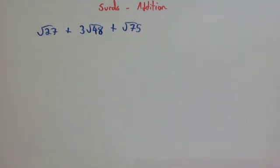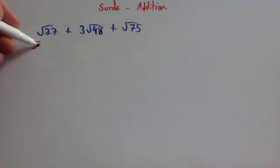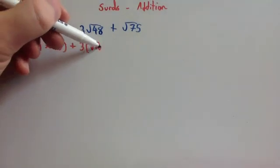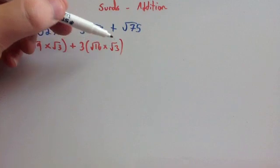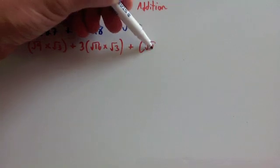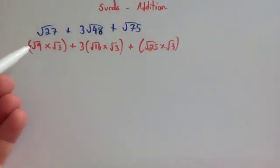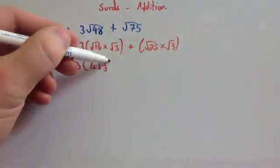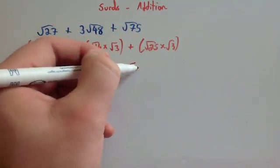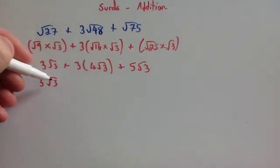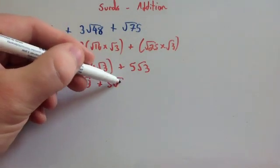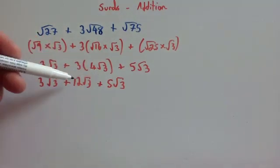Next we're going to do root 27 plus 3 root 48 plus root 75. Let's simplify each: the largest square number in 27 is 9, so root 9 times root 3; the largest square number in 48 is 16, so root 16 times root 3; the largest square number in 75 is 25, so root 25 times root 3. The square root of 9 is 3, giving 3 root 3; plus 3 brackets with square root of 16 being 4, giving 4 root 3; plus square root of 25 being 5, giving 5 root 3. Multiplying out: 3 root 3 plus 12 root 3 plus 5 root 3, which equals 20 root 3.